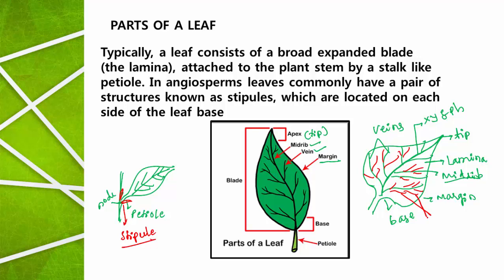The branches arising from the veins are called veinlets. The diameter of veinlets is much narrower compared to the veins. So: the midrib is the thick middle part containing xylem and phloem, the branches of the midrib are called veins, and veins further branch into many minute structures called veinlets. The arrangement of veins and veinlets will be explained in the next video.